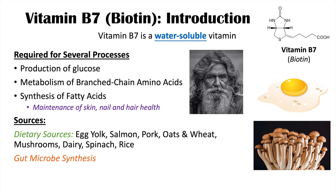A biotin deficiency is often due to decreased dietary intake, or decreased absorption of biotin — which can result from gastrointestinal conditions like celiac disease. Interestingly, eating raw eggs can also lead to biotin deficiency, because a substance in raw eggs reduces the absorption of biotin. Additionally, use of broad-spectrum antibiotics can eliminate gut microbes and reduce biotin synthesis, contributing to a deficiency.